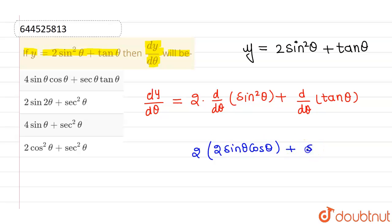So this will be 2 times 2sinθcosθ plus sec²θ. This is dy over dθ.